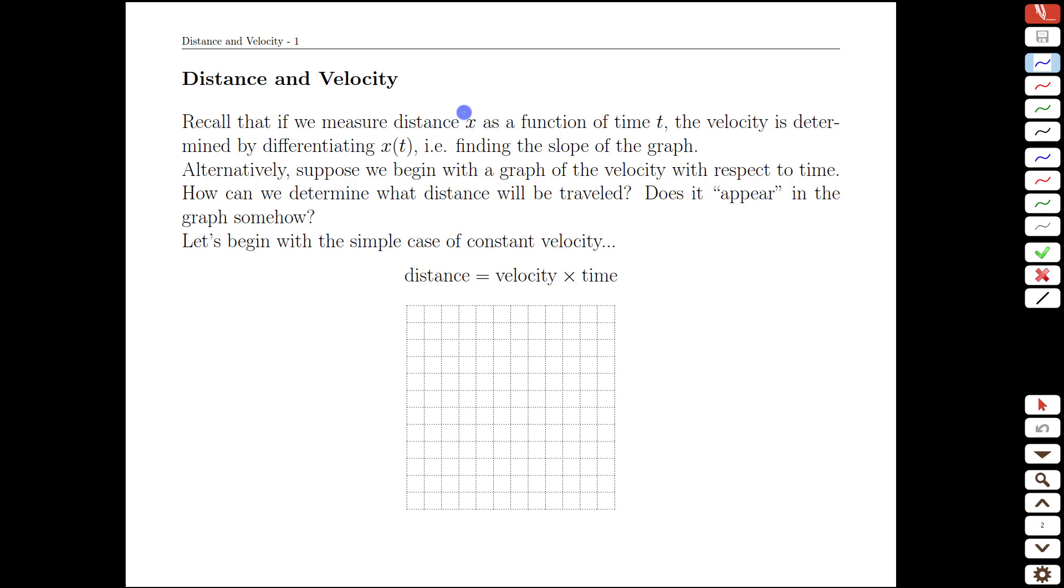We've seen already that if we've measured the distance as a function of time, then the velocity is the derivative of the position. We already stated that before. Velocity is the time derivative of the position function.